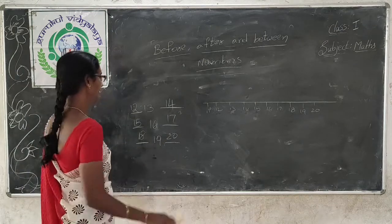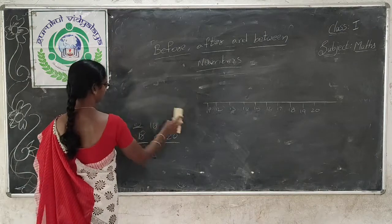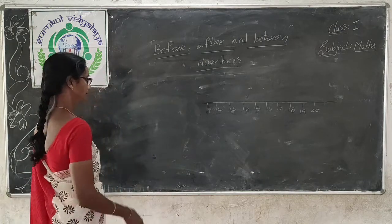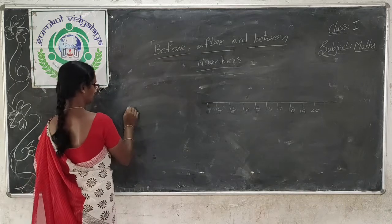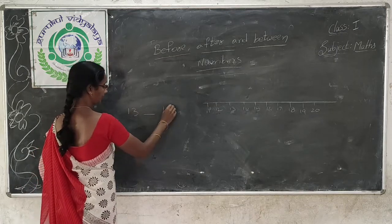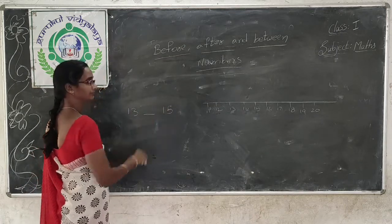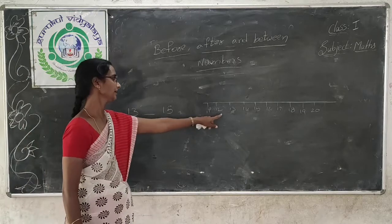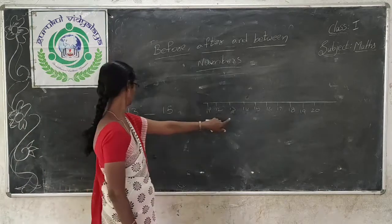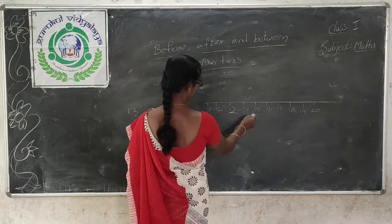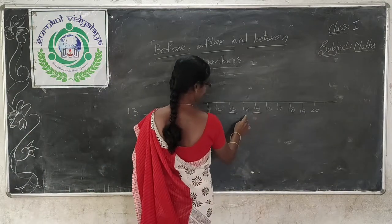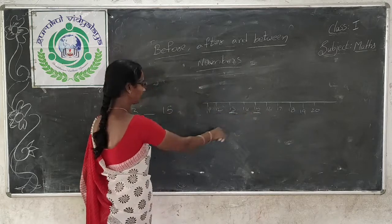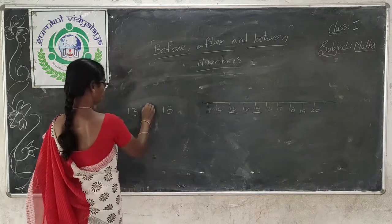Now see, between numbers. 13 and 15. Which number comes between 13 and 15? 14. So 14 comes between 13 and 15.